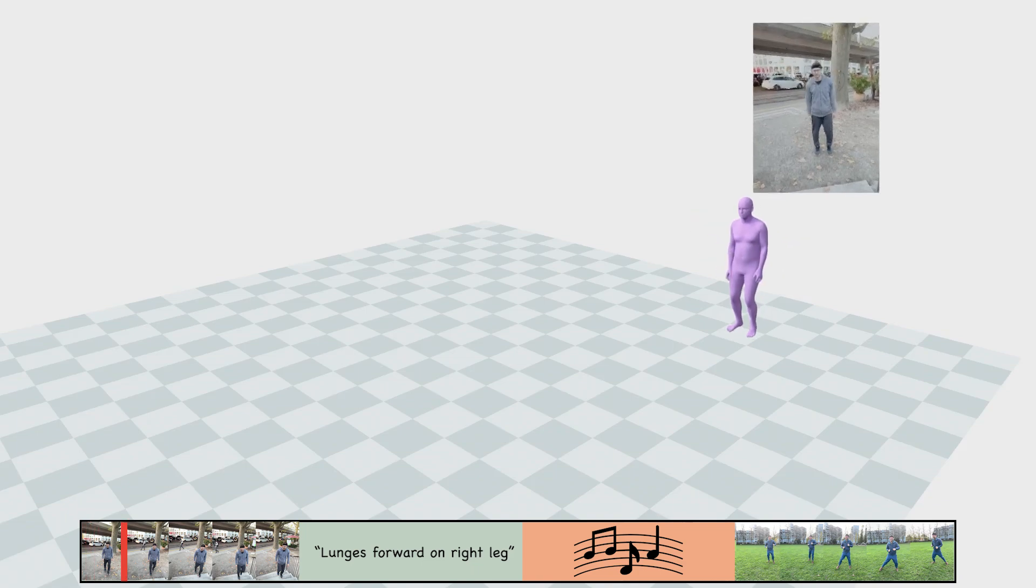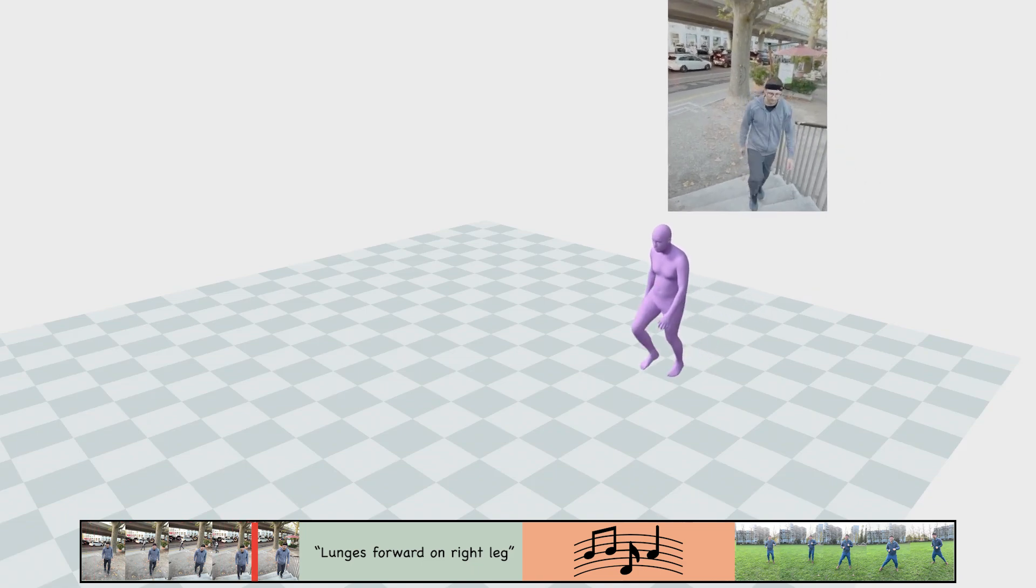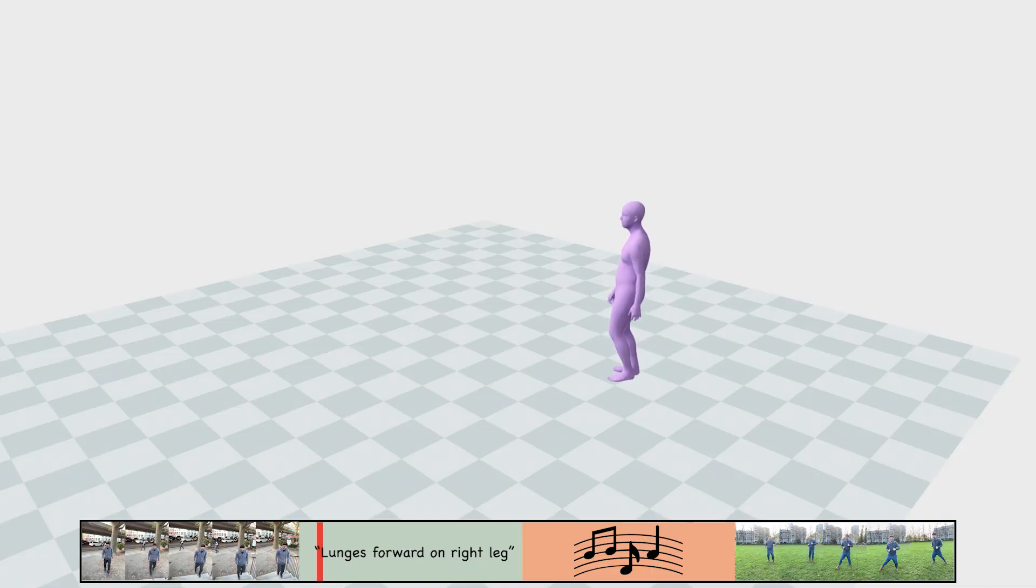Imagine a user wants to generate a motion sequence that seamlessly transitions between multiple conditions, starting with a video, following a text, dancing to the music, and finally matching another video.